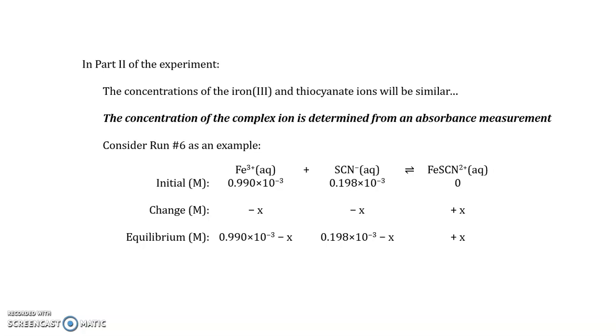Given that we're measuring the absorbance of the iron-thiocyanate complex, we'll know its concentration at equilibrium. That concentration, taken from the absorbance measurement, will represent X. And with X known, it becomes possible to calculate the value of the equilibrium constant.